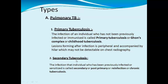Secondary tuberculosis refers to infection in an individual who has been previously infected or sensitized. It is also called post-primary, reinfection, or chronic tuberculosis. A COVID-19 analogy is used — similar to getting re-infected after a previous infection, secondary tuberculosis is a re-infection in a previously sensitized person.